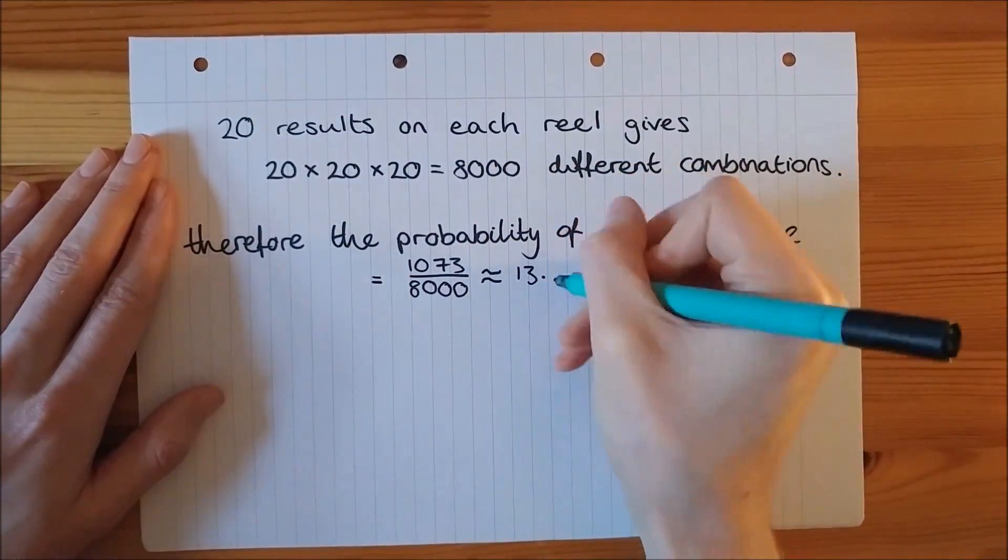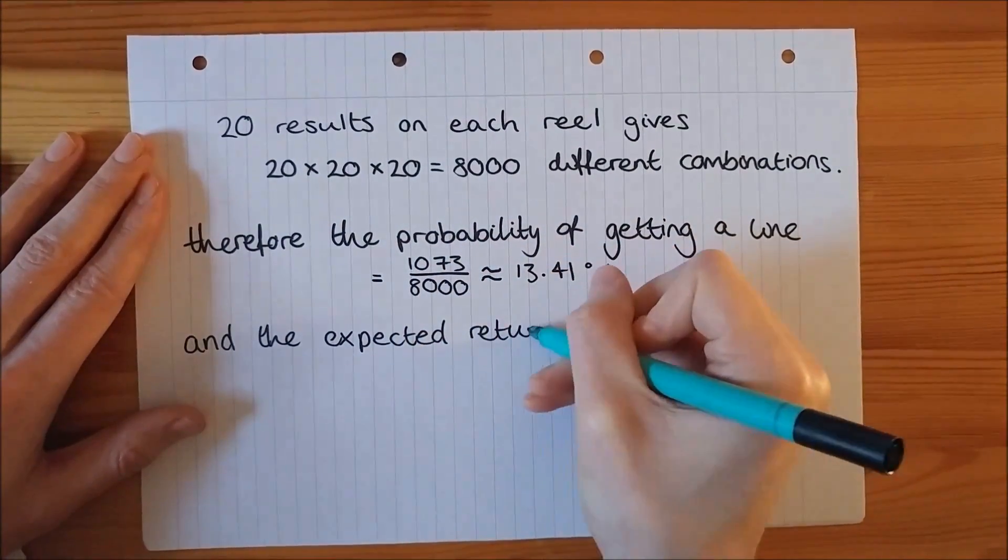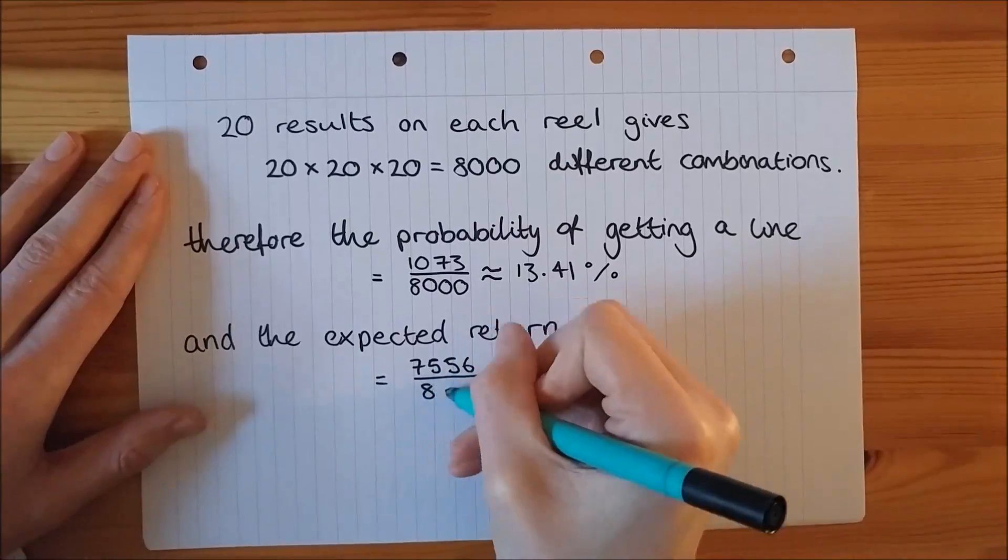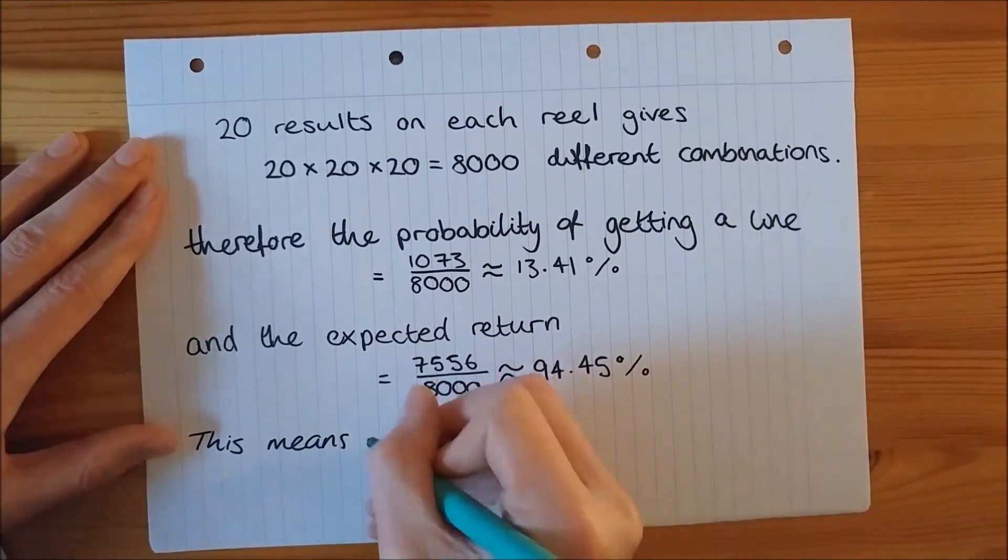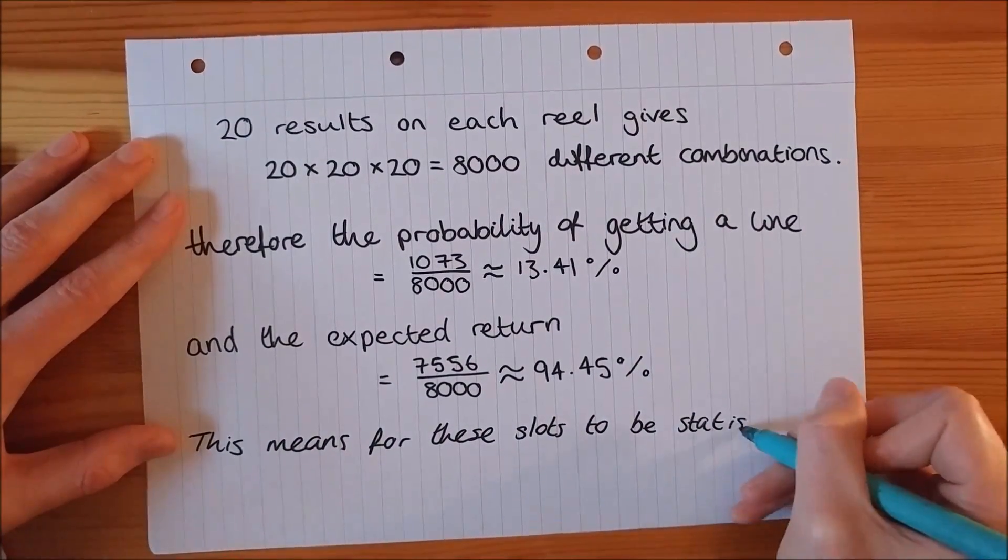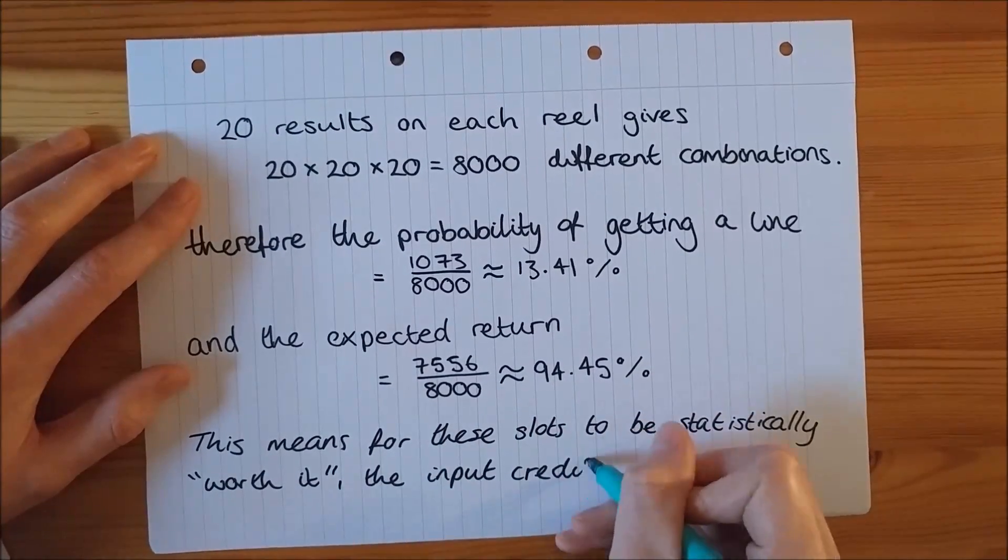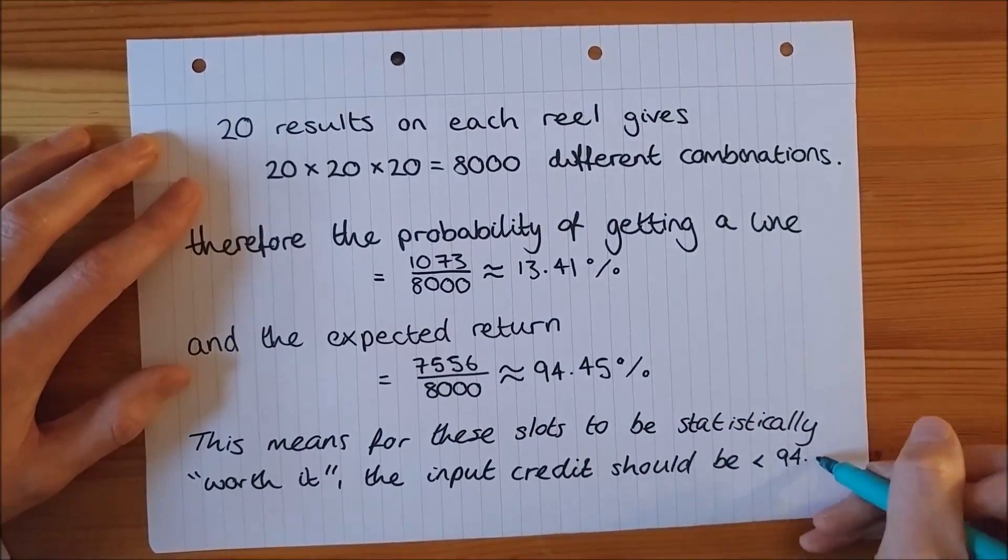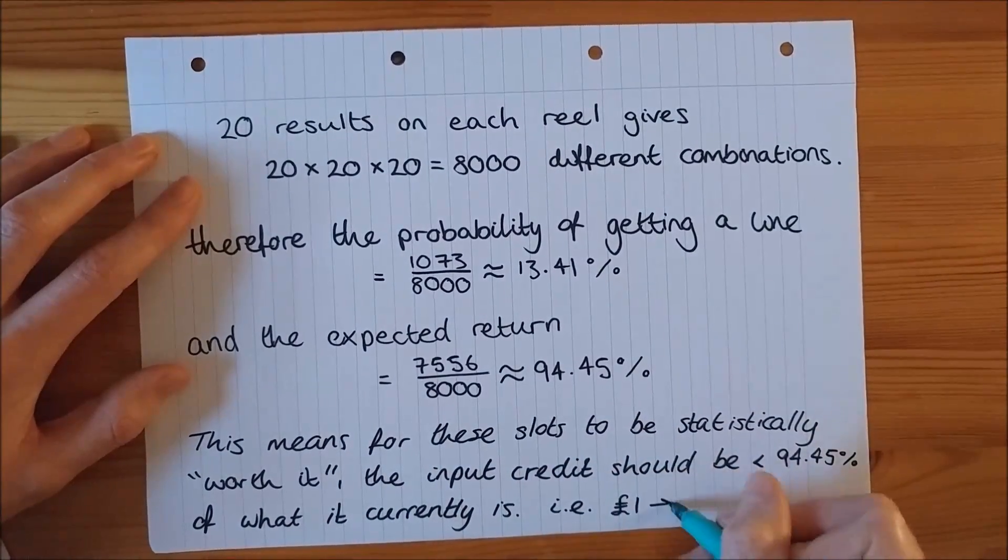And the expected return is equal to 7,556 over 8,000, which is approximately equal to 94.45%. This means for these slots to be statistically worth it, the input credit should be less than 94.45% of what it currently is, i.e. £1 should go down to 94 pence.